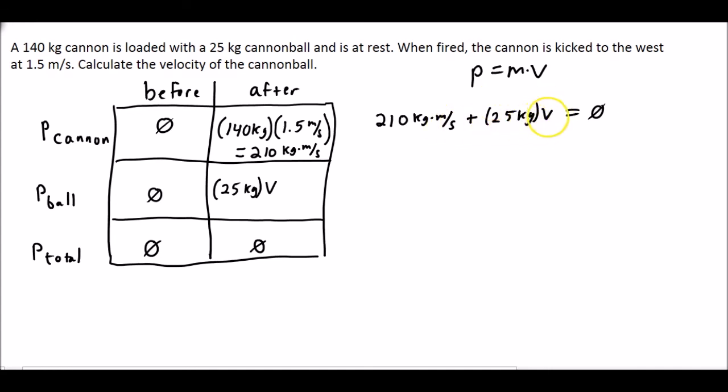Now we need to get velocity by itself here. So we'll subtract from both sides the 210. 25 kg times velocity equals negative 210 kilogram meters per second.